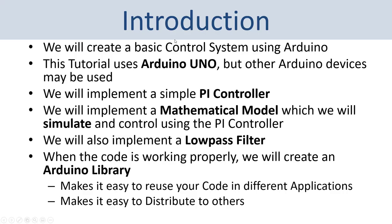First, a short introduction. We will create a basic control system using Arduino. In this tutorial I will use Arduino Uno, but you can use other Arduino devices if you prefer. We will create a simple PI controller and implement a mathematical model, which we will simulate and control using this PI controller. We will also implement a low pass filter because this control library can be used to control real processes.